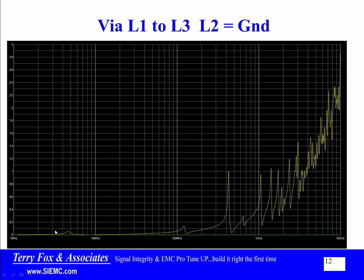In looking at this, going either side of a single ground plane and up through 1 gigahertz, the worst resonant peak is 1 ohm. Going up to 2, 3, 4, or 5 gigahertz, the worst peak is still below 1.6 ohms.